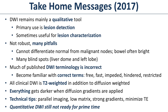In 2017, diffusion-weighted imaging is mainly a qualitative tool, mainly for lesion detection — it's a conspicuity sequence. It's sometimes useful for lesion characterization, and I'll just touch on that, but it's really used for lesion detection. Diffusion doesn't usually tell you whether something's benign or malignant, or whether it's inflammatory or neoplastic. Sometimes it does, but mainly it's detection.